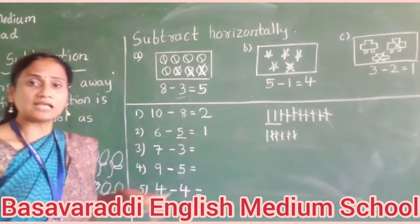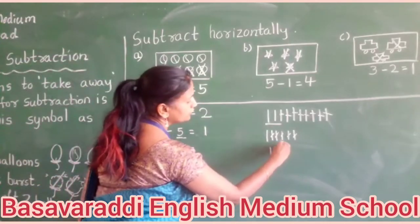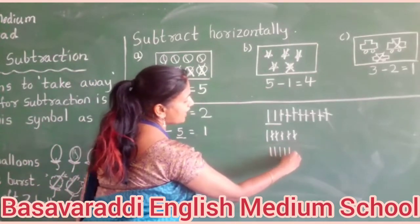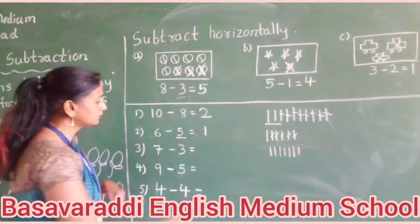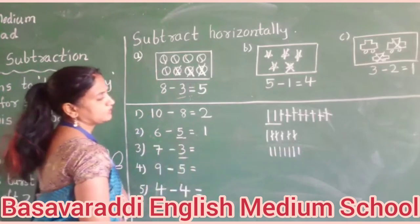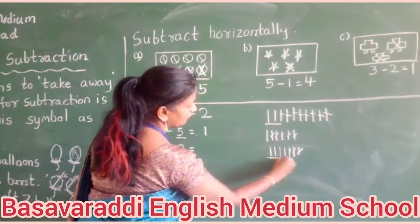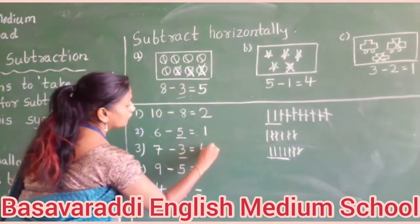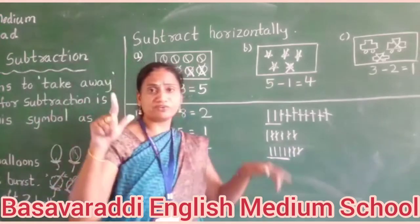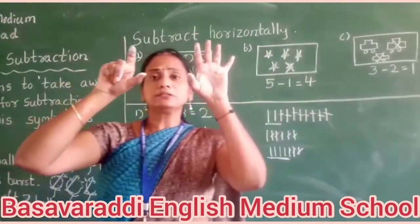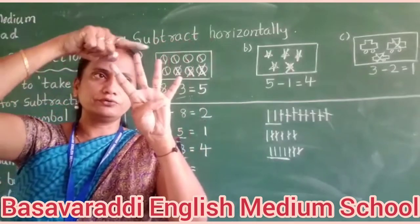Third one: seven minus three. One, two, three, four, five, six, seven. Now we have to cross three — three lines. One, two, three crossed. Remaining four. The answer is four. I am holding seven fingers and fold three fingers — remaining four: one, two, three, four.